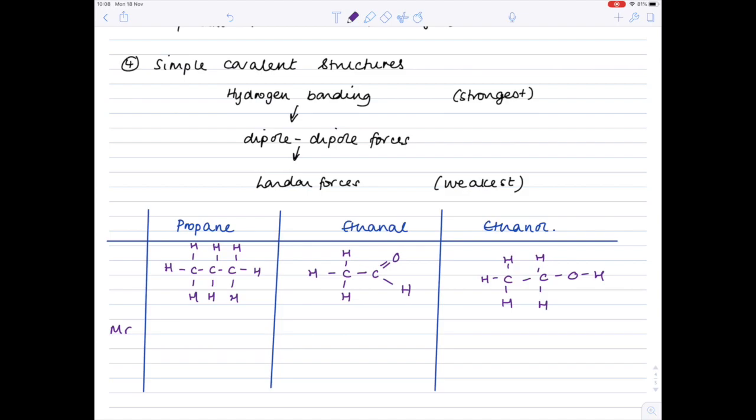Now if we compare the MRs, so their molecular masses, very similar, 44, 44 versus 46. Remember you can calculate that using the periodic table. Now the all-important melting points.